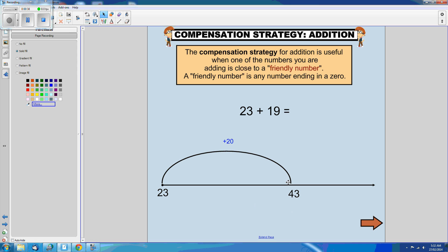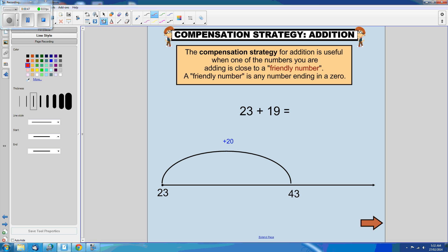When I add 20, it's 43. I often call the compensation strategy the oops strategy, and this is why.